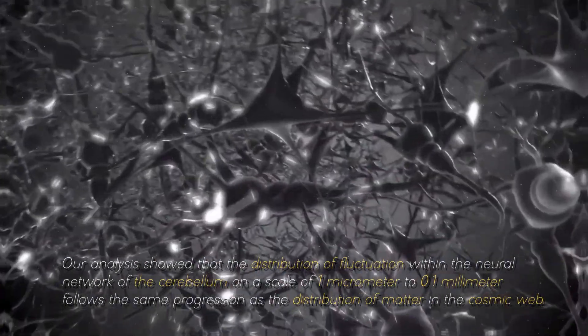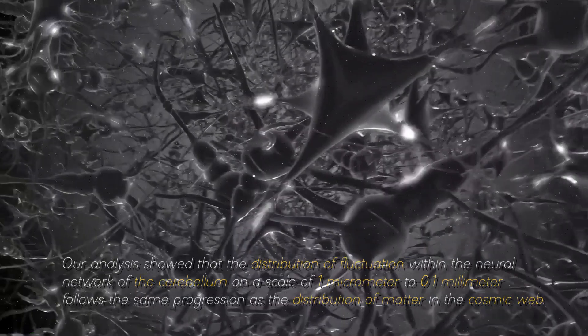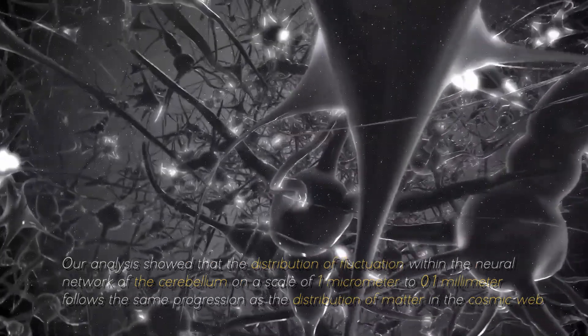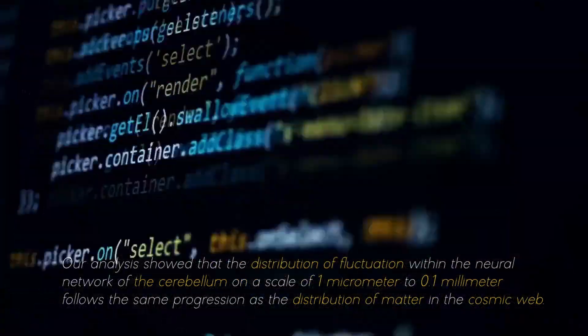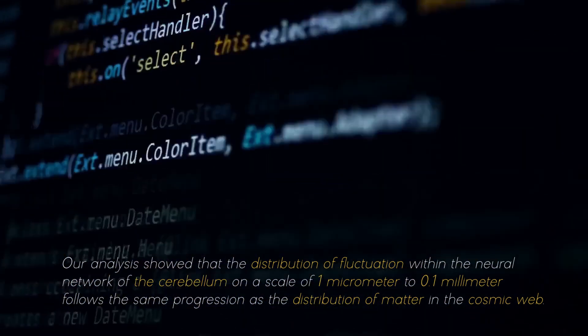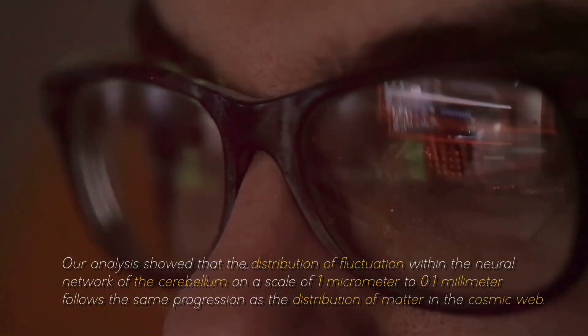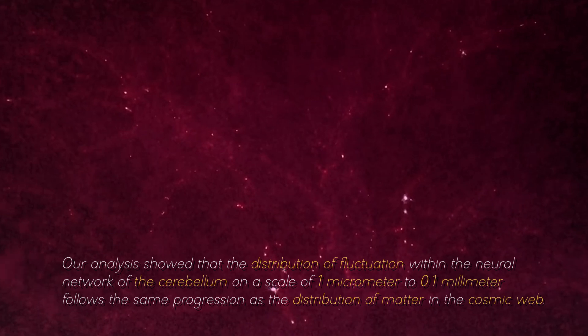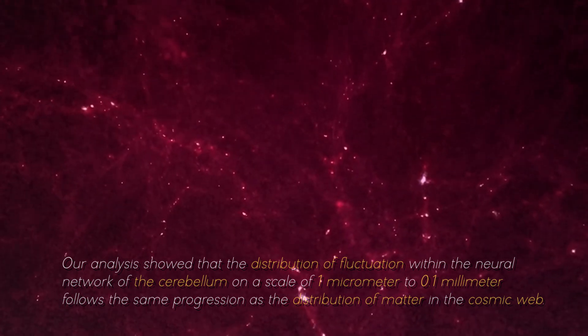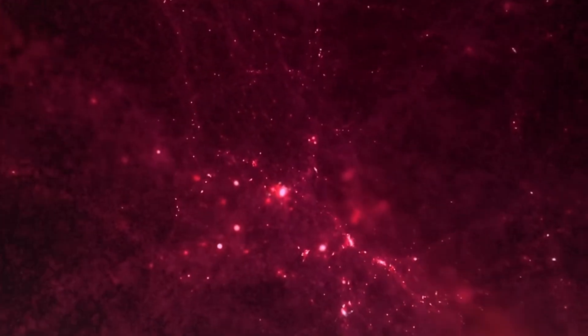Our analysis showed that the distribution of fluctuation within the neutral network of the cerebellium on a scale of 1 micrometer to 0.1 millimeters follows the same progression as the distribution of matter in the cosmic web, commented one of the researchers in charge of this project.